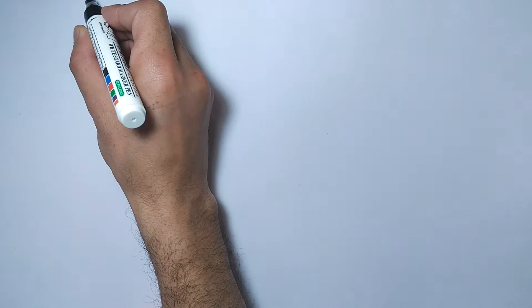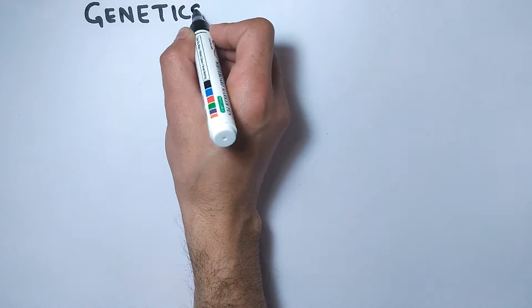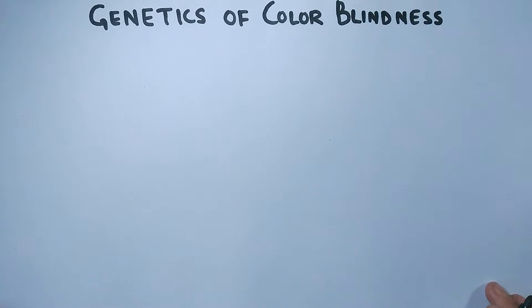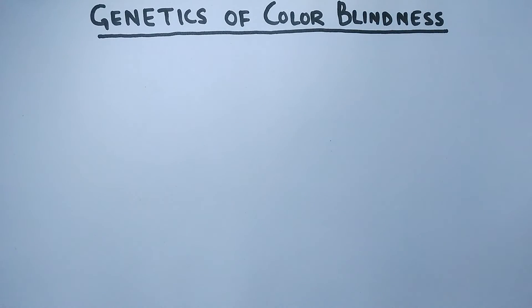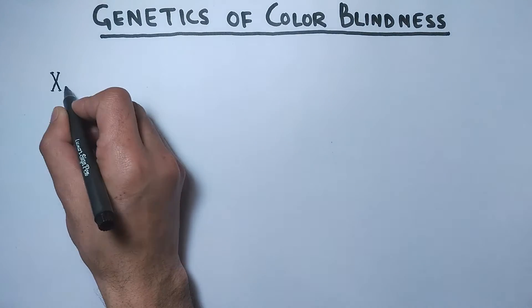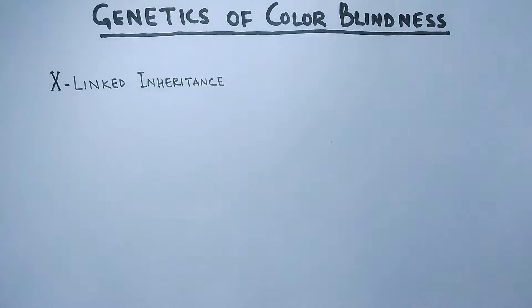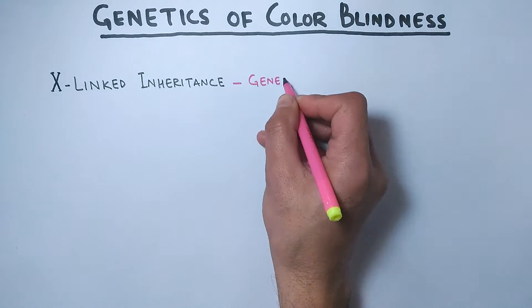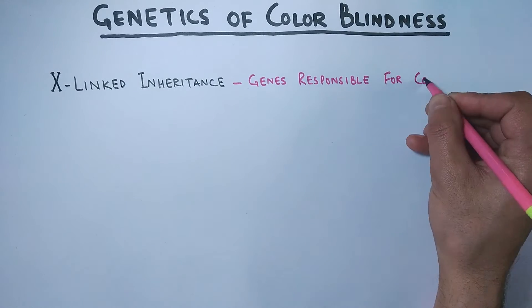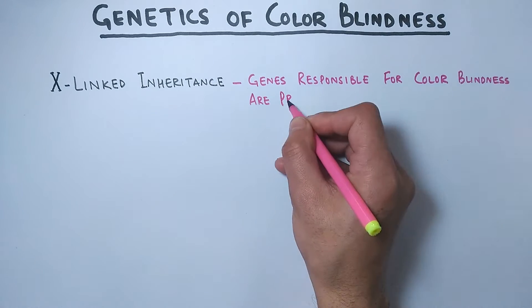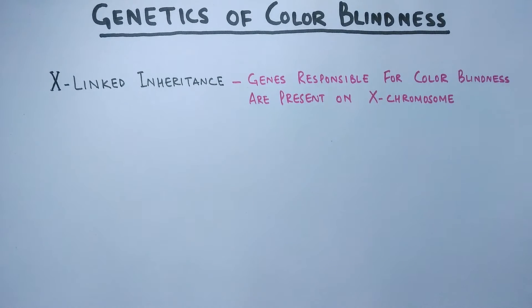Welcome back friends. In this video we will be discussing the genetics of colorblindness. When we see colorblindness at the molecular level, we come to know that it is an X-linked inheritance — that means the genes responsible for colorblindness in humans are present on the X chromosome.